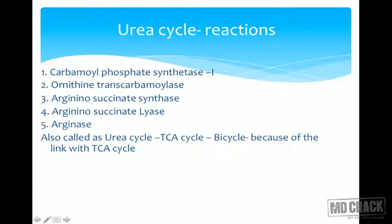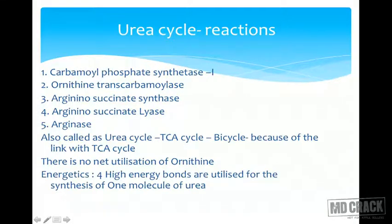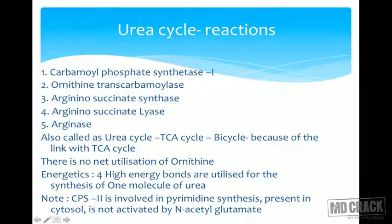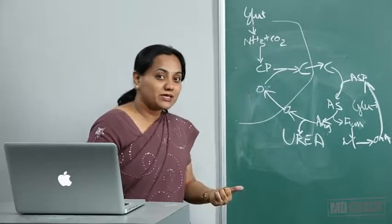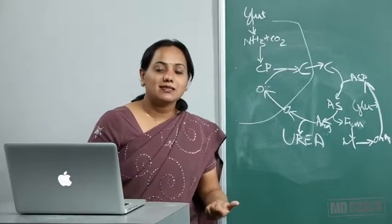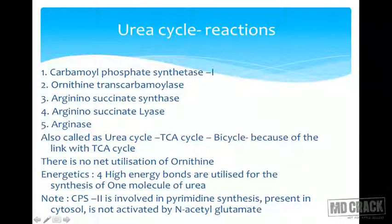CPS1 is present within the mitochondria. There is also CPS2 (carbamoyl phosphate synthetase 2), which is involved in pyrimidine synthesis and is present in the cytosol. A key distinguishing feature: CPS2 is not activated by N-acetyl glutamate, whereas CPS1 is activated by N-acetyl glutamate. The rate-limiting and regulatory enzyme is CPS1, and N-acetyl glutamate is its essential activator. N-acetyl glutamate is formed from acetyl-CoA and glutamate, and arginine is an activator of its synthesis.